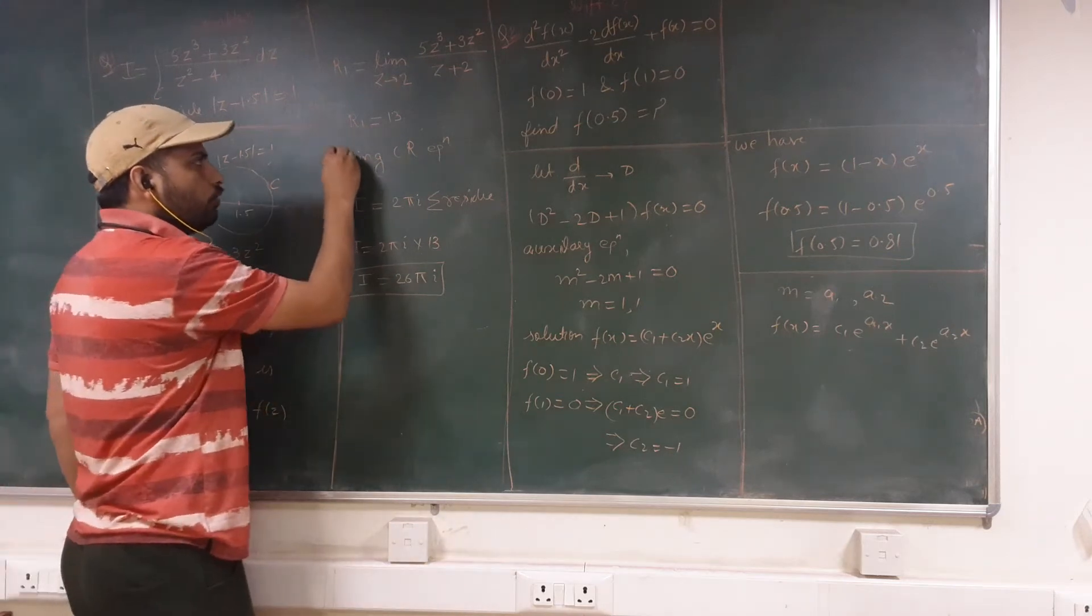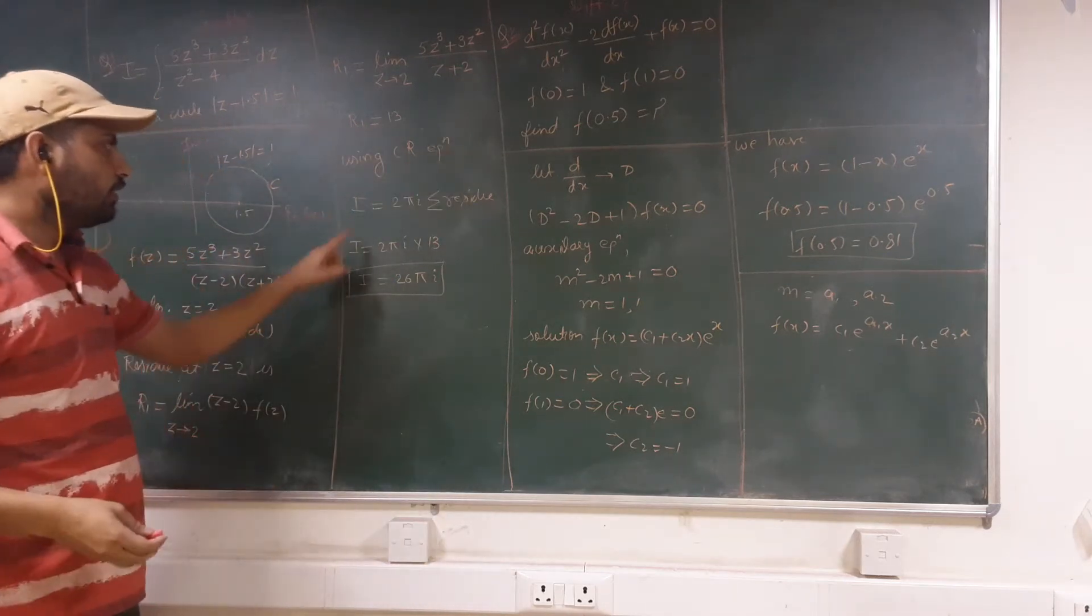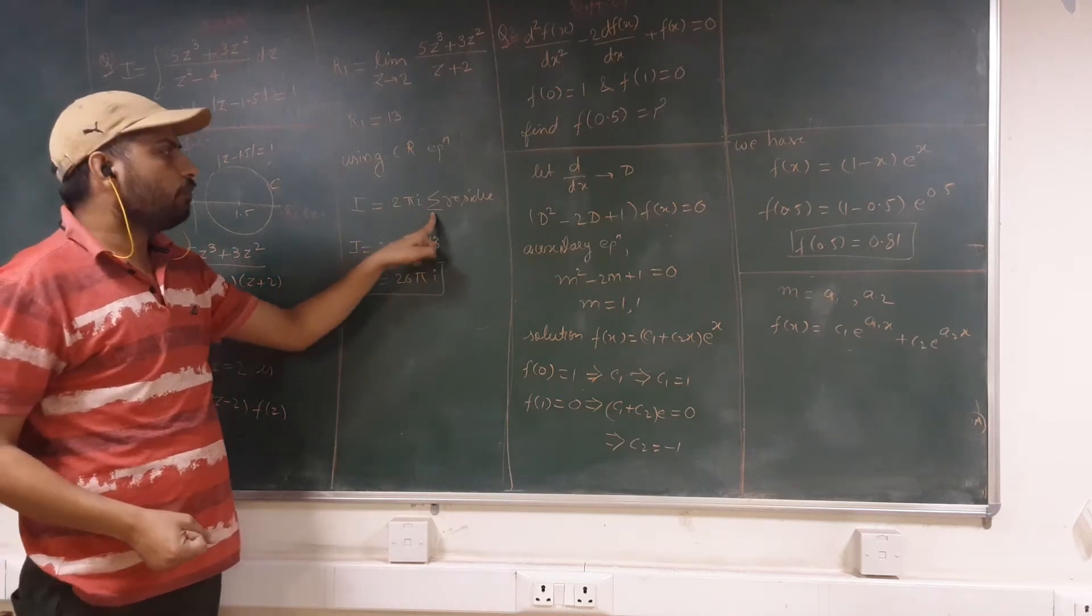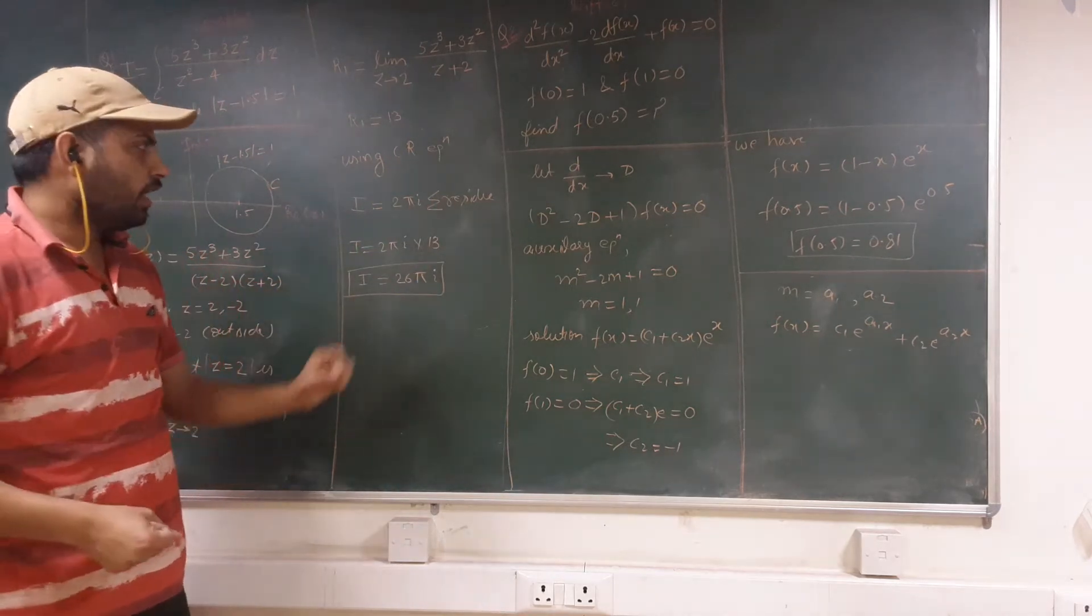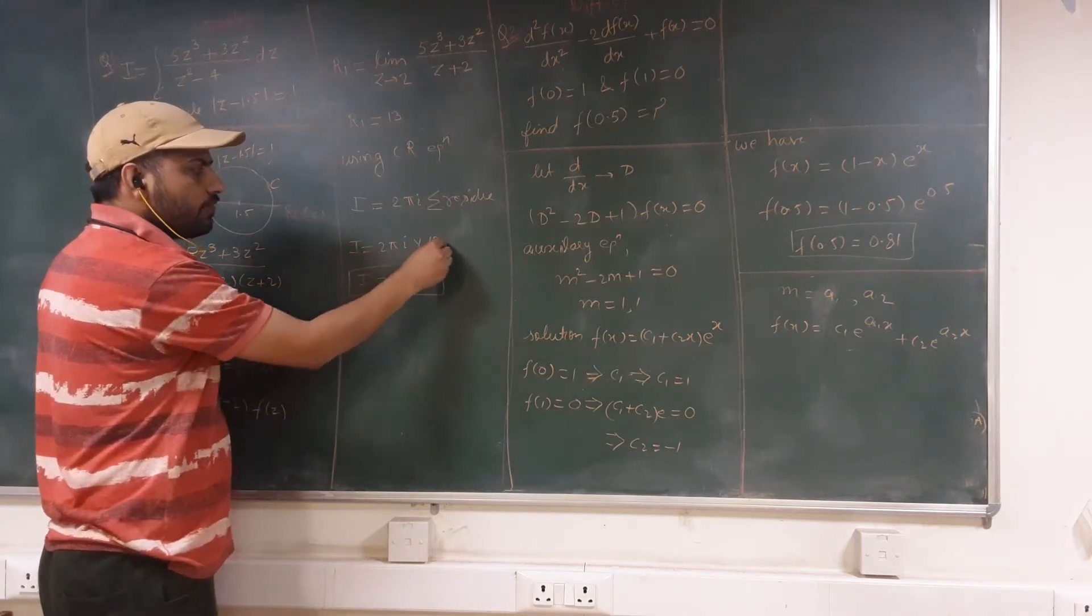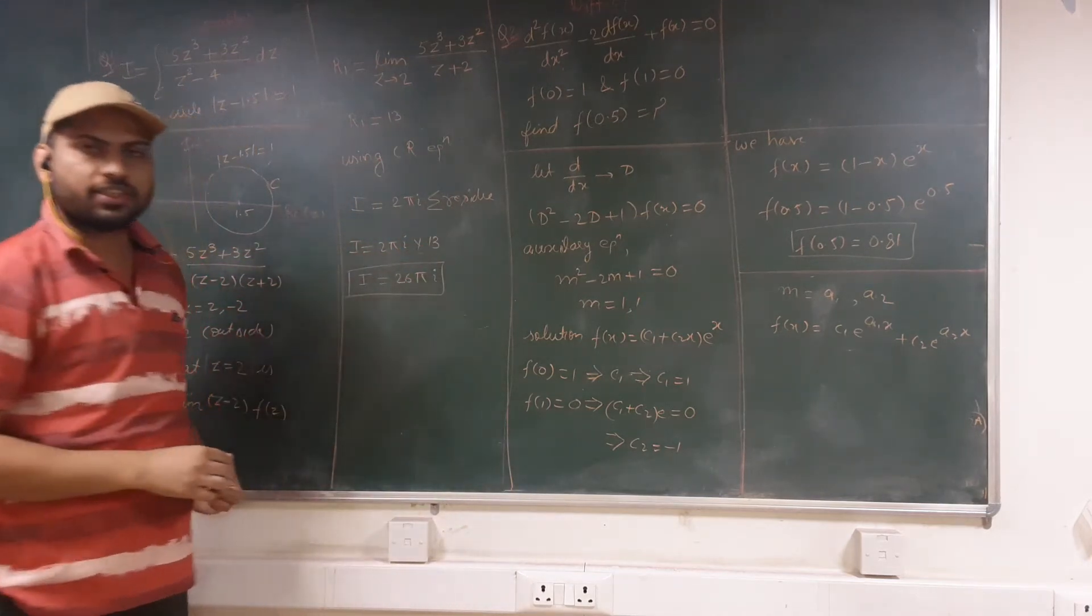Now using the Cauchy residue theorem, we can say that the integration of this particular function will be 2πi times summation of all the residues, and there is only one residue. So the answer will be 2πi times 13. So your answer will be 26πi.